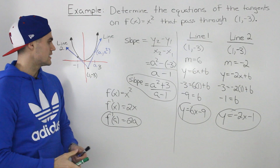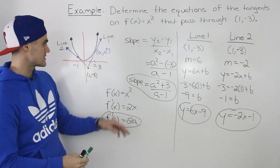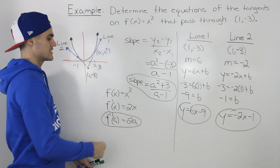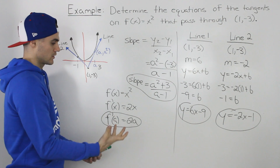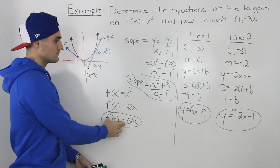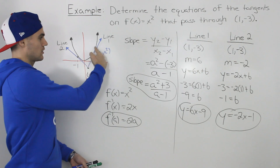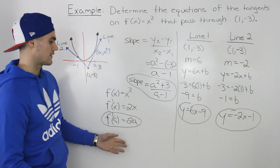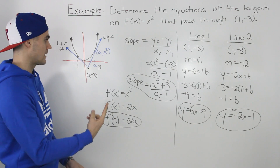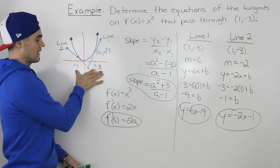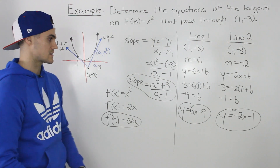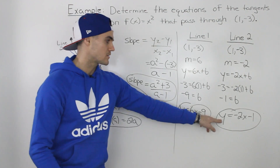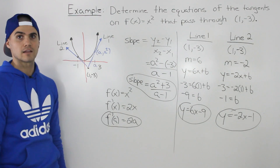So those two are our answers. Again, the algebra is not too bad. The toughest part is recognizing that we can get two expressions for the slope of the tangent — one using the derivative, and one using rise over run — then setting them equal and solving for a. We get two a values, 3 and -1, and from those we find the equations of the lines: y = 6x - 9 for the first line, and y = -2x - 1 for the second line.